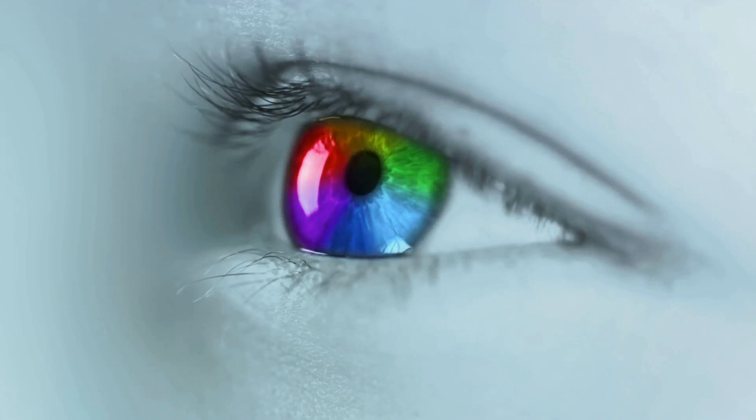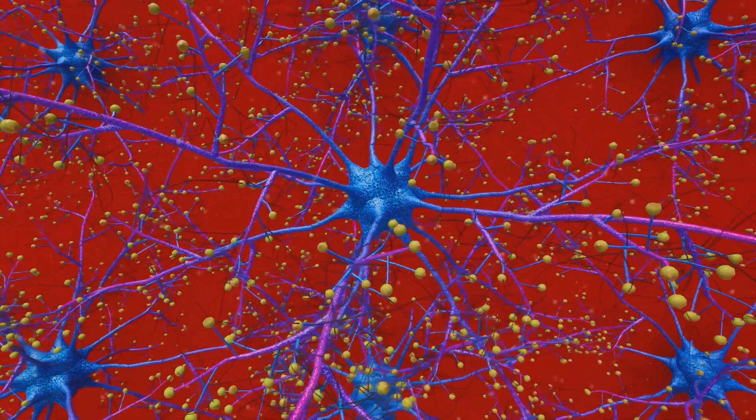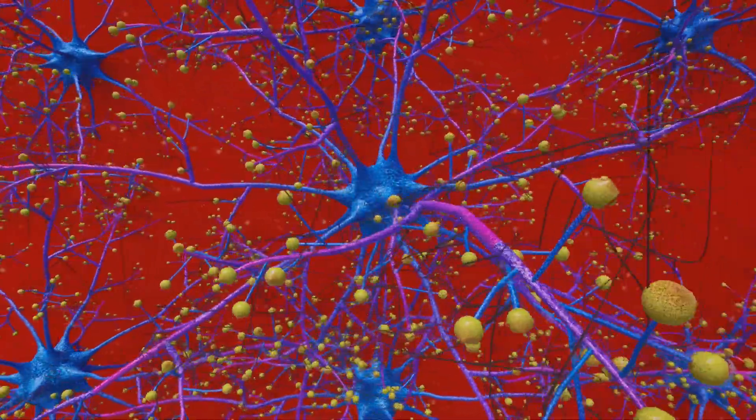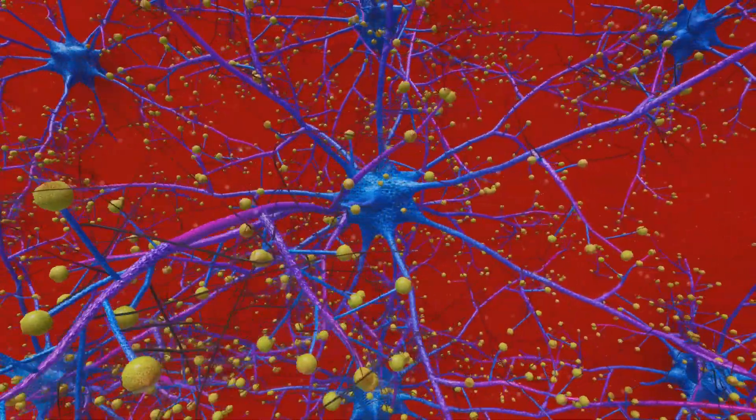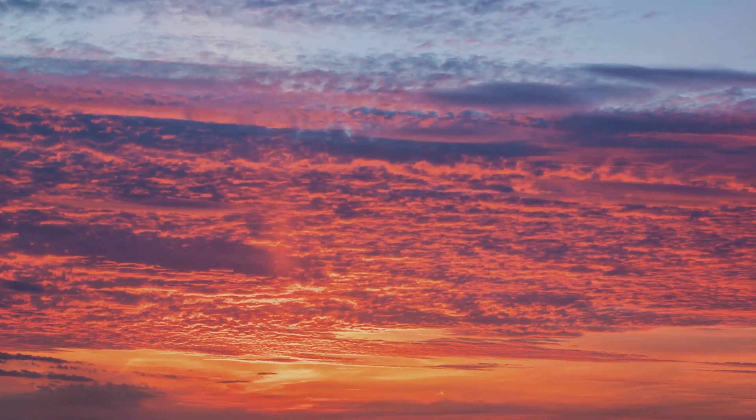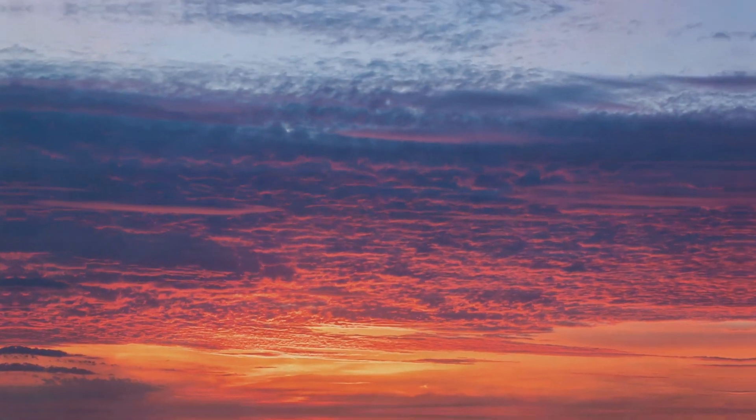These signals from millions of cones are then sent to the brain. The brain processes this information, compares the signals from the different types of cones, and creates a mental representation of color. Hence, the colors we see are a result of our brain's interpretation of different wavelengths of light.